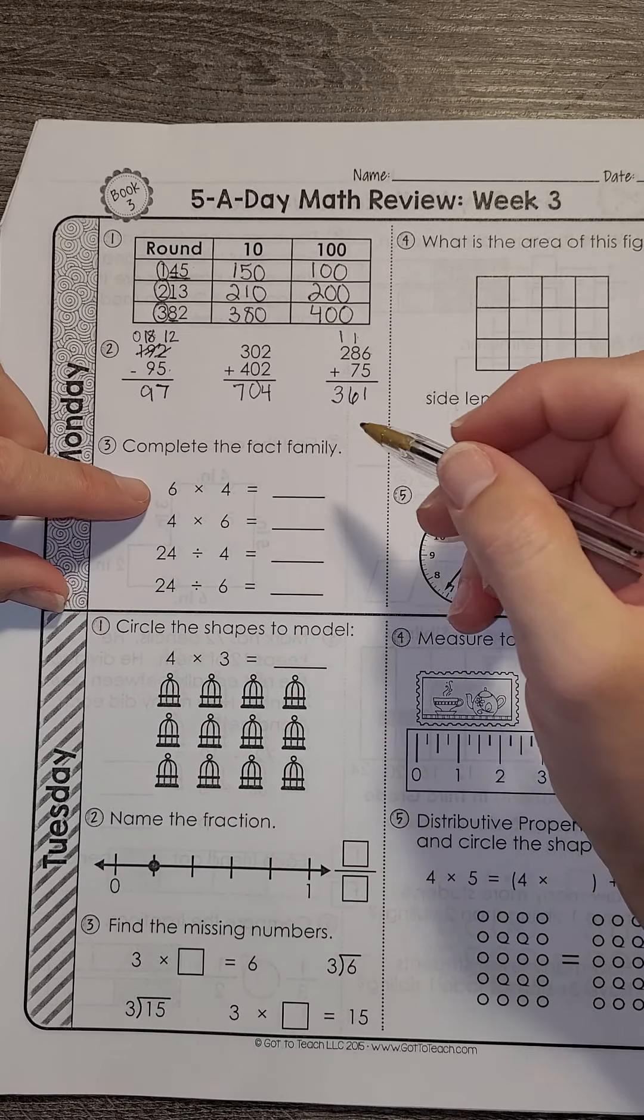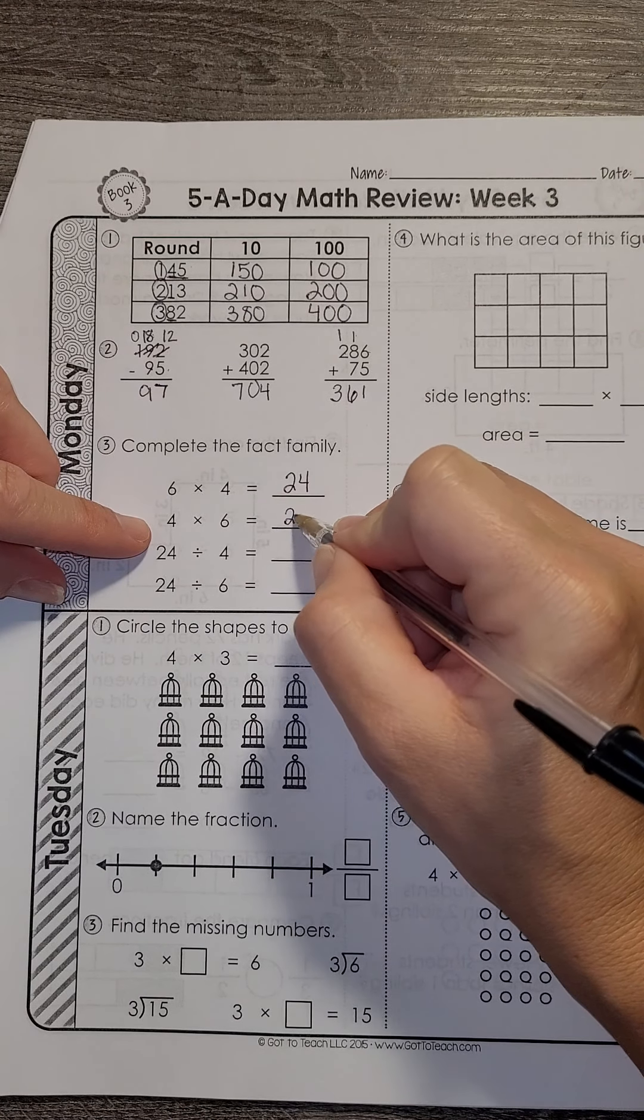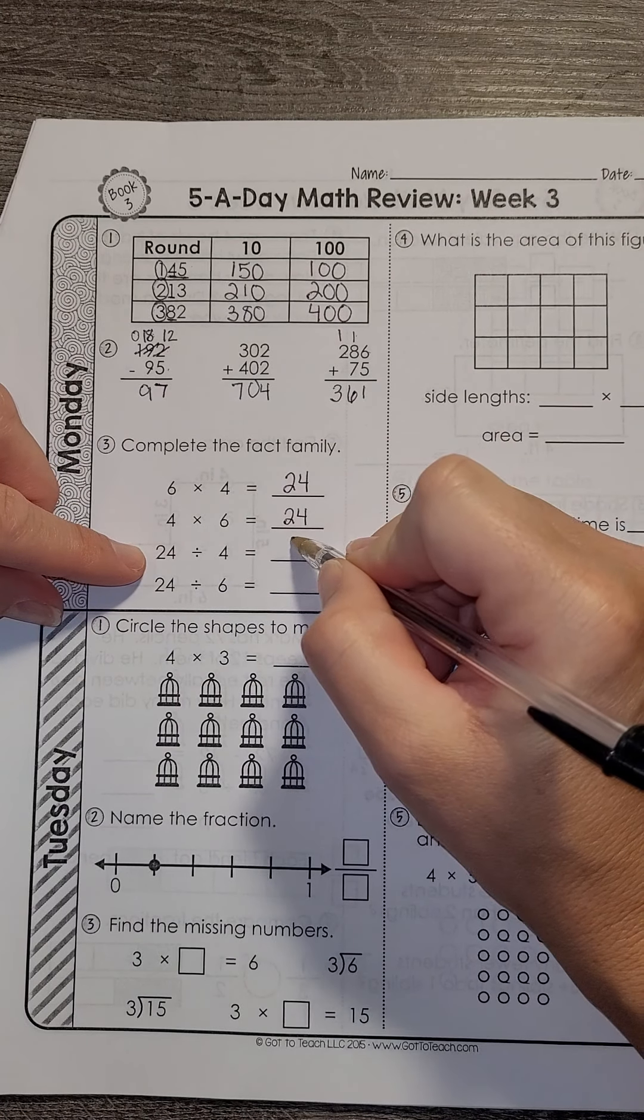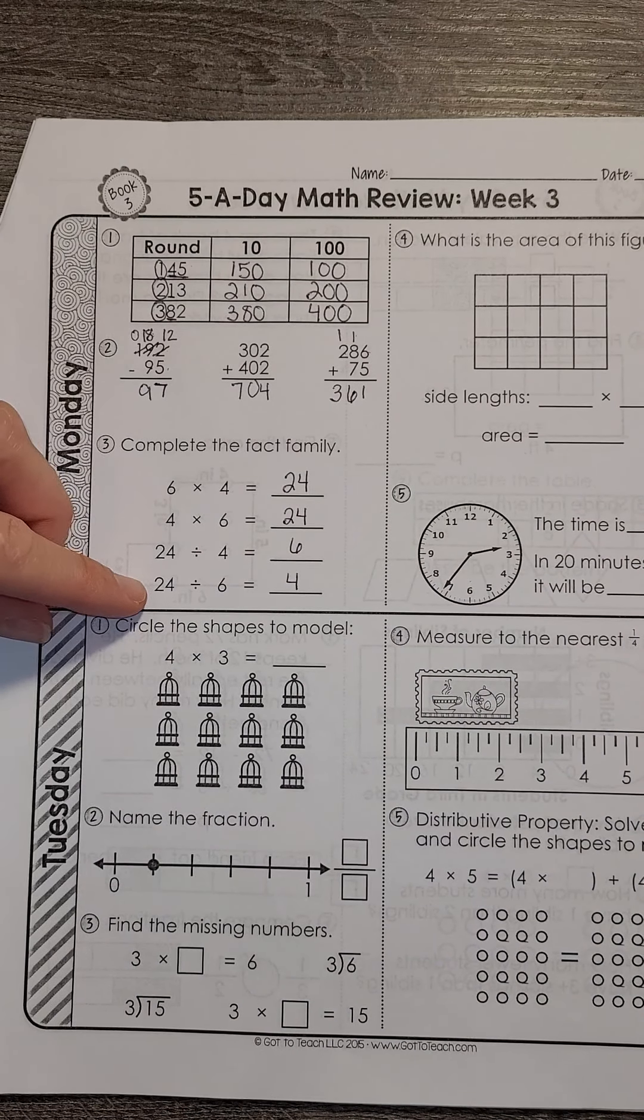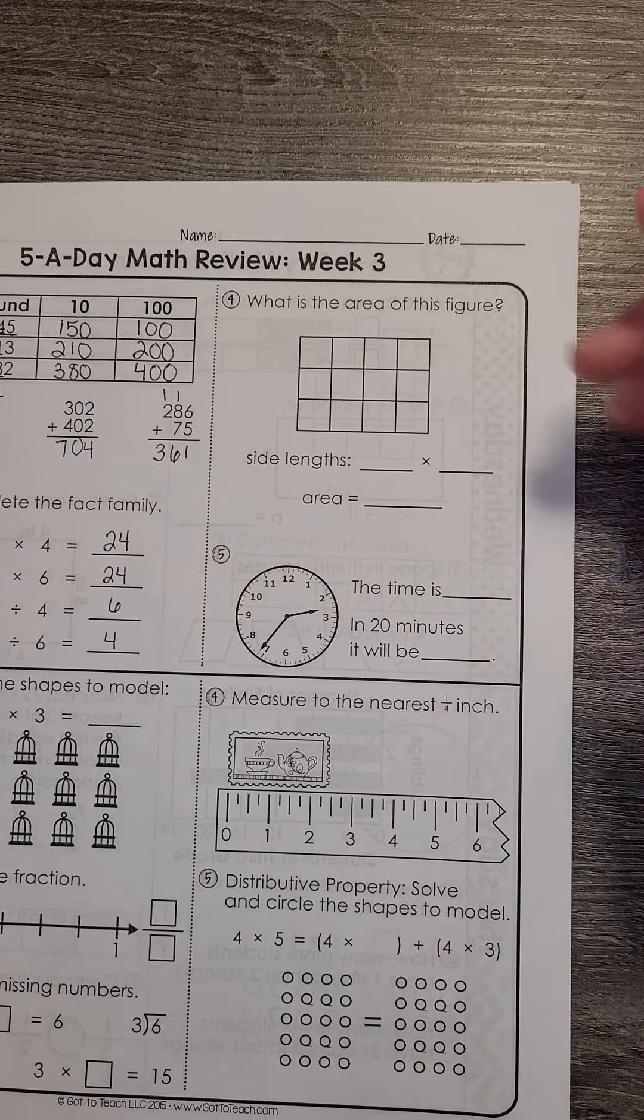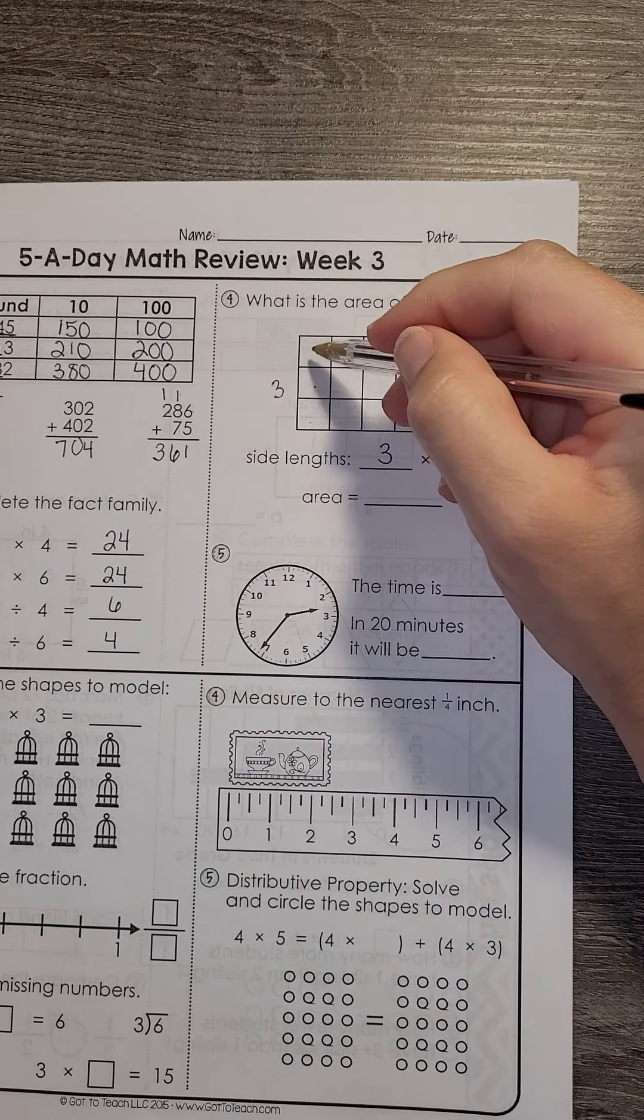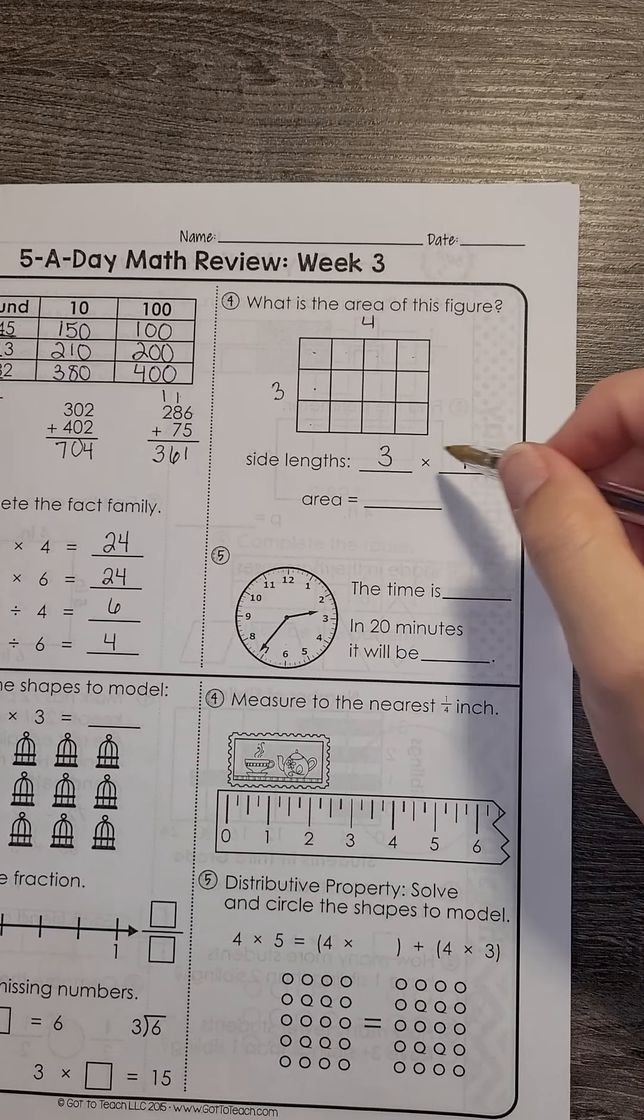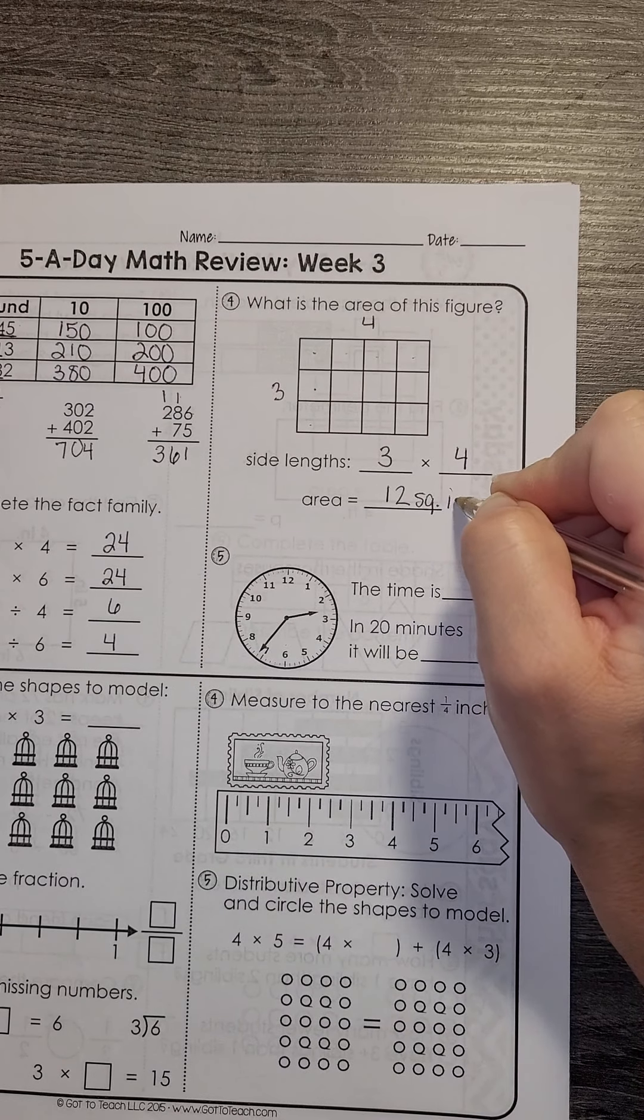Fact family. So 6 times 4 is 24. Using that commutative property, 4 times 6 is 24. And now we're going to be dividing. 24 divided by 4 is 6. 24 divided by 6 is 4. So working on those fact families. Number 4 on Monday is area. So we're looking at the sides. So we have 3 as our one side length and 4 as our other to make an array. So 3 times 4 would give me an area of 12 square inches.